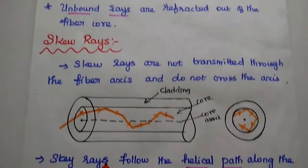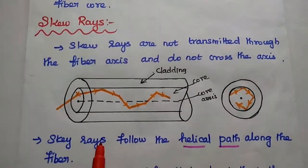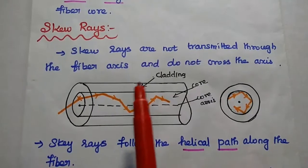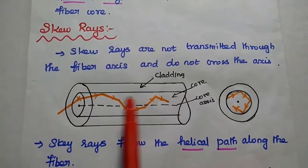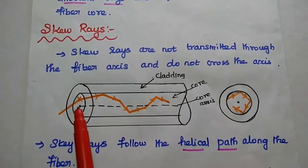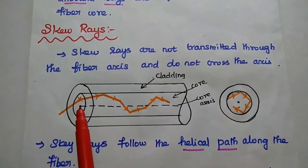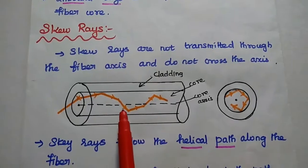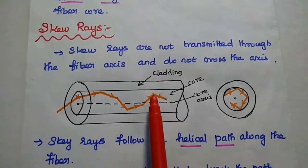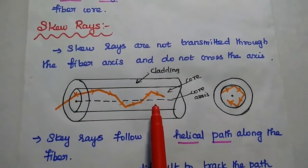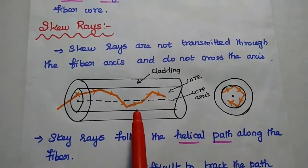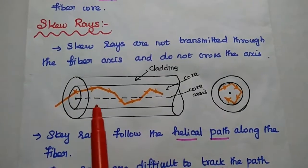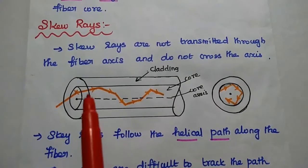The next one is skew rays. Skew rays are not transmitted through the fiber axis and do not cross the axis at each reflection. It is just opposite to the meridional rays.